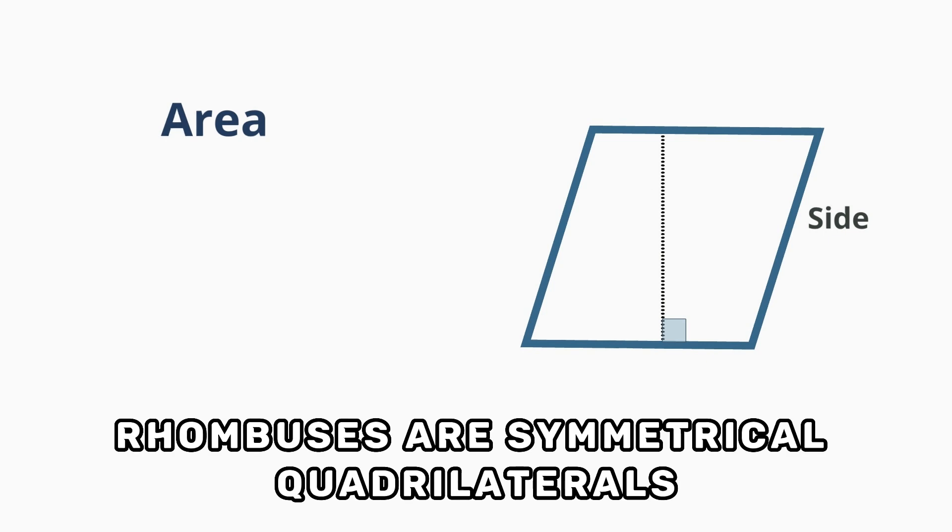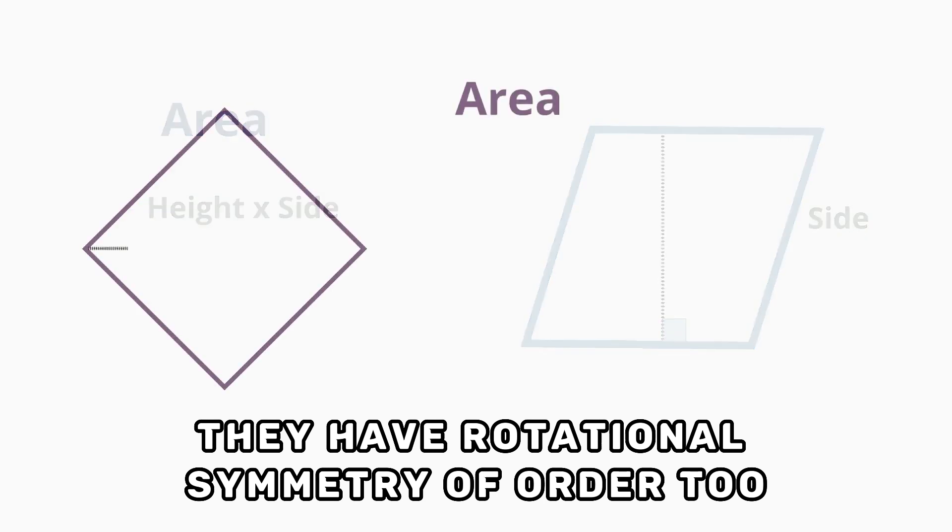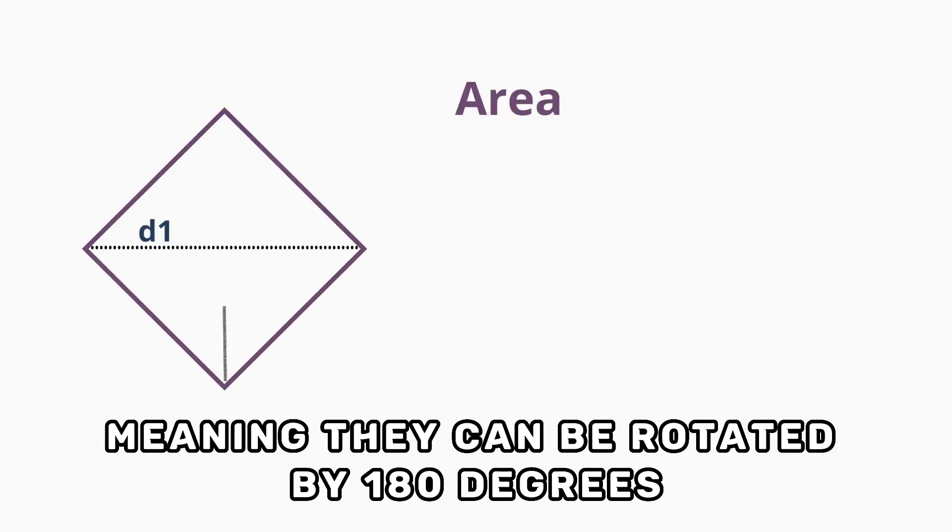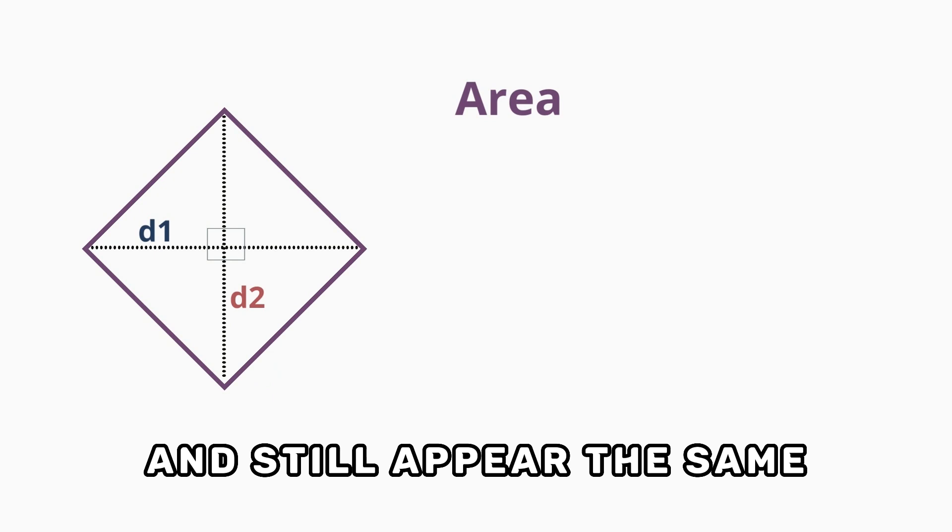Symmetry of rhombus: Rhombuses are symmetrical quadrilaterals. They have rotational symmetry of order 2, meaning they can be rotated by 180 degrees and still appear the same.